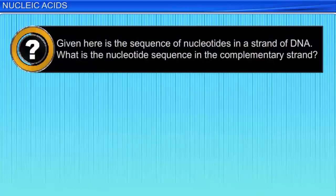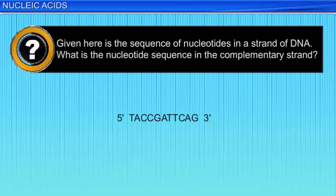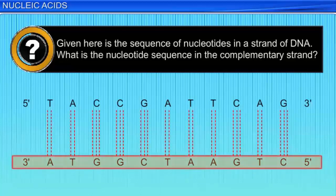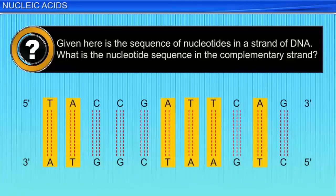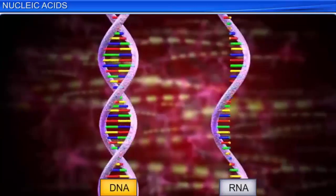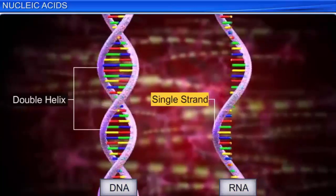Given a sequence of nucleotides in a strand of DNA, what is the nucleotide sequence in the complementary strand? Remember that the complementary strand runs in the opposite direction, and that T pairs with A, while C pairs with G. Therefore, the sequence of the complementary strand can be readily worked out. While DNA is found as a double helix, RNA is single stranded. The strand may fold back on itself to form helical motifs such as stem loops or hairpin structures.